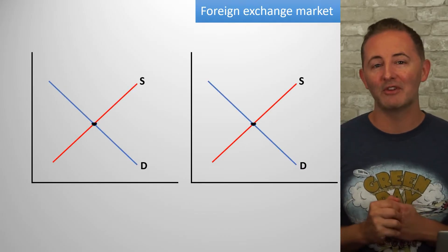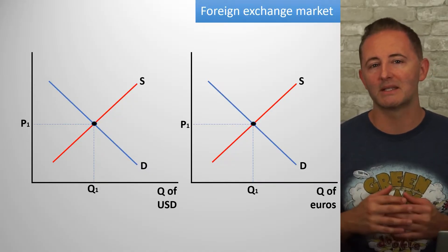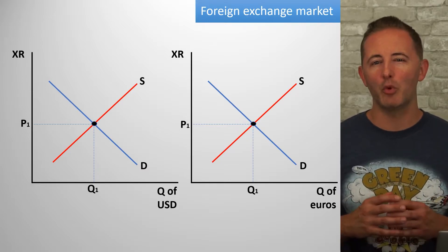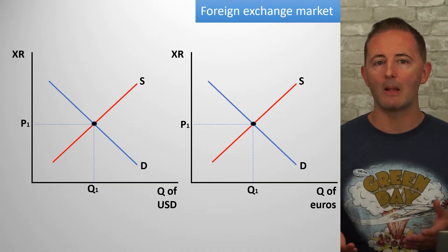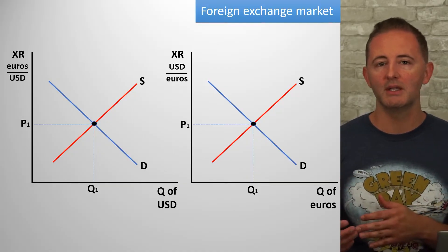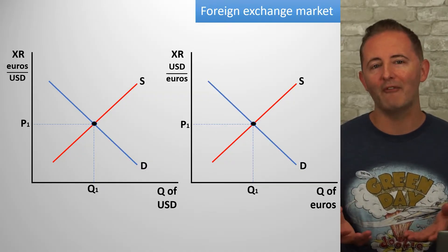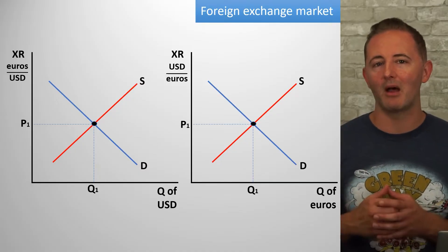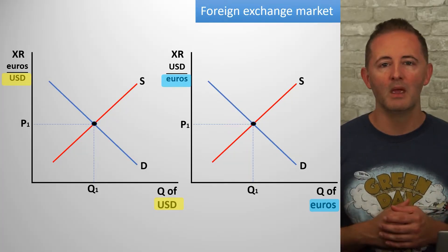Now it's time to graph our foreign exchange market, or FEM — and this is the last new model of macro. On the left is the market for the US dollar, and on the right is the market for the euro. The vertical axis is the price, which is the exchange rate. On the dollar market, the price of a dollar is expressed as euros per dollar; on the euro market, euros are priced as dollars per euro. Whatever currency your model is for is labeled on the x-axis and is also the bottom of your ratio on the y-axis.